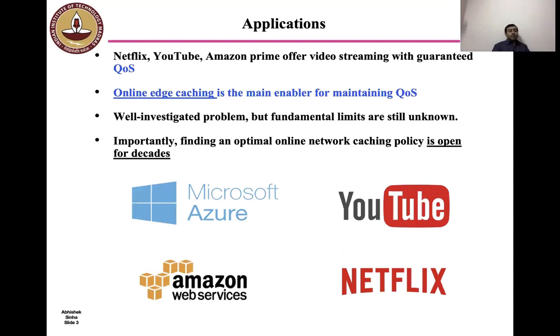Major video service providers such as Netflix, YouTube, Amazon Prime use network caching as one of their main tools to meet the quality of service requirements. The caching problem in general has been investigated in sufficient depth and breadth in the literature. However, the problem remains very active of research due to the exponential rise in the internet video traffic. Moreover, as we will discuss in upcoming slides, the fundamental limits of network caching from an online learning point of view remains unexplored till date.